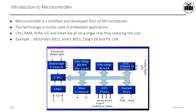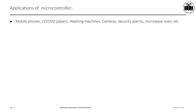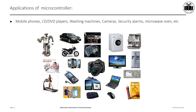The block diagram of the microcontroller shows the CPU, interrupt control, oscillator, ROM and RAM memory, timers, serial ports, I/O ports, and bus control — all on a single chip. Microcontrollers have very wide applications in embedded systems, including mobile phones, DVD players, washing machines, cameras, security alarms, microwave ovens, and most home appliances that are available today.